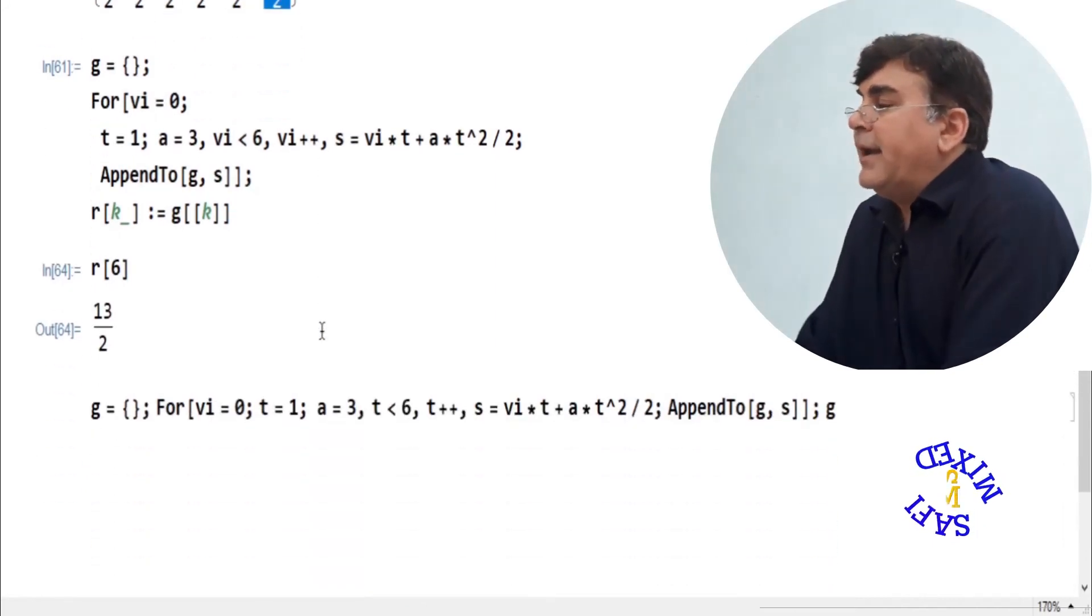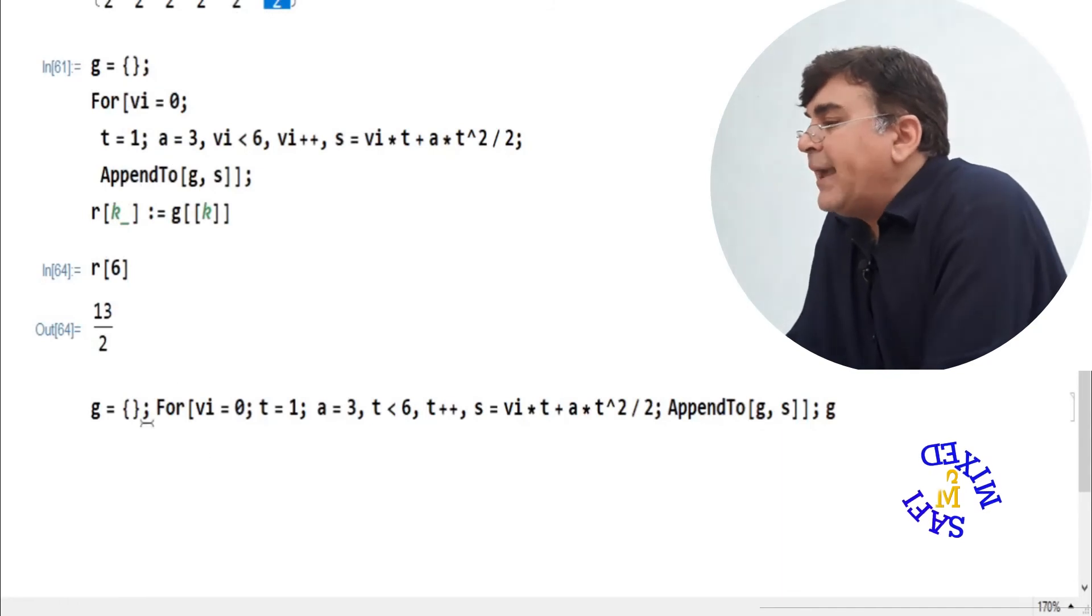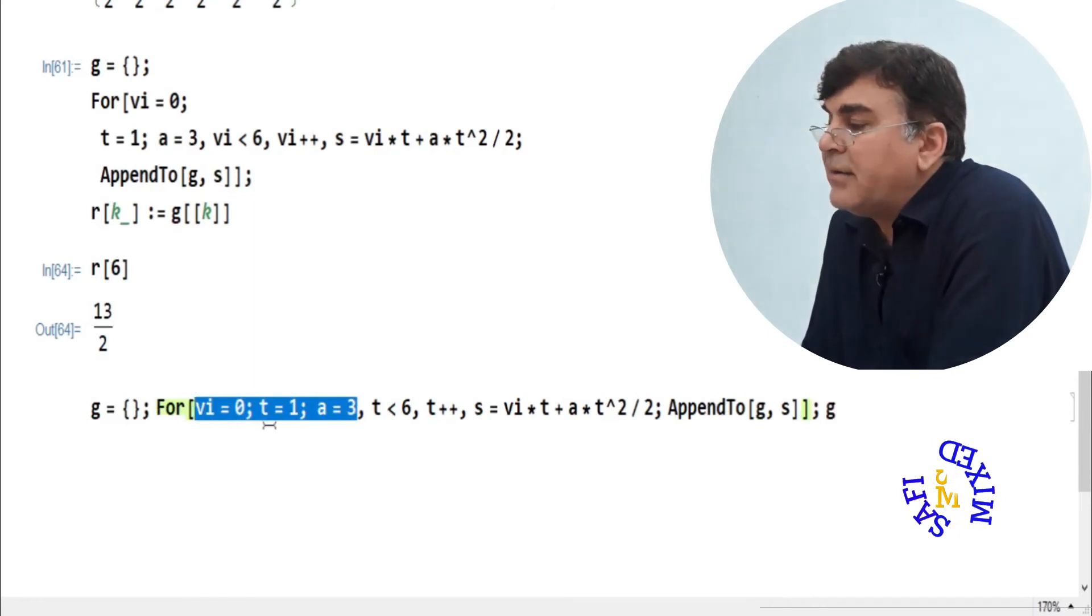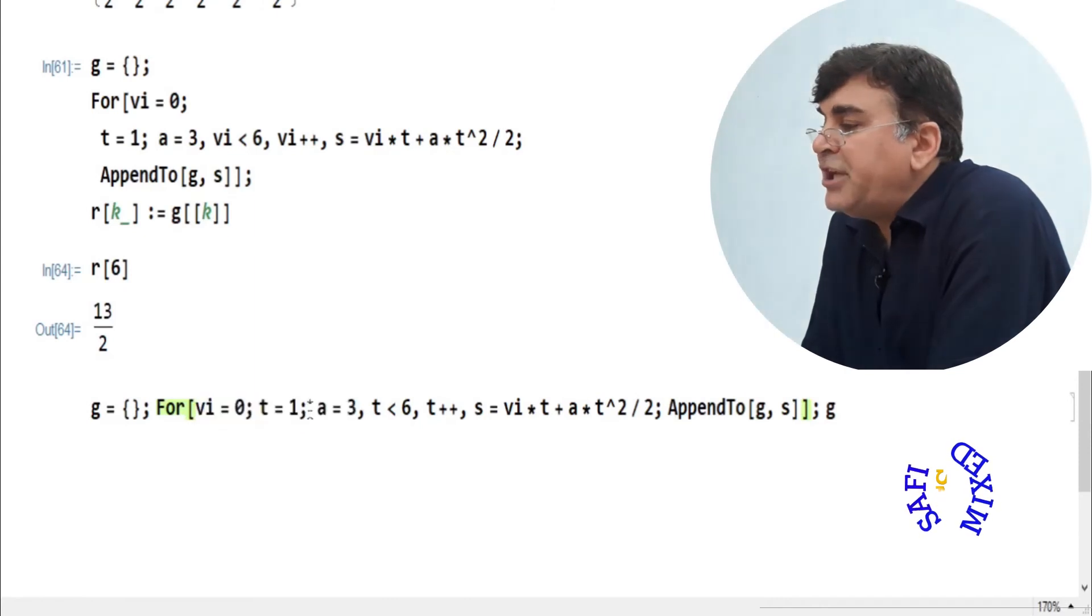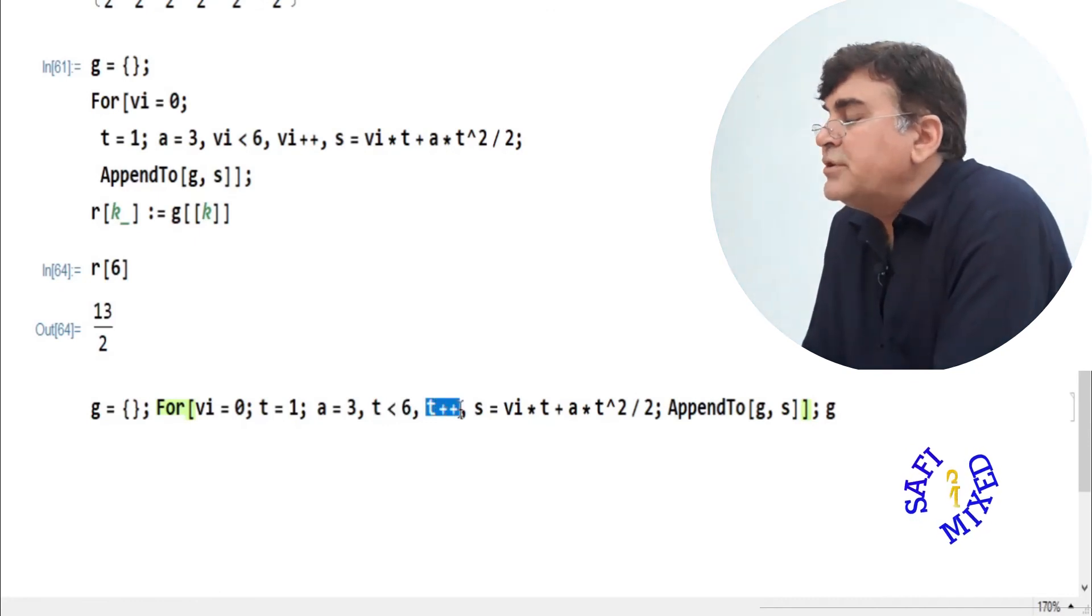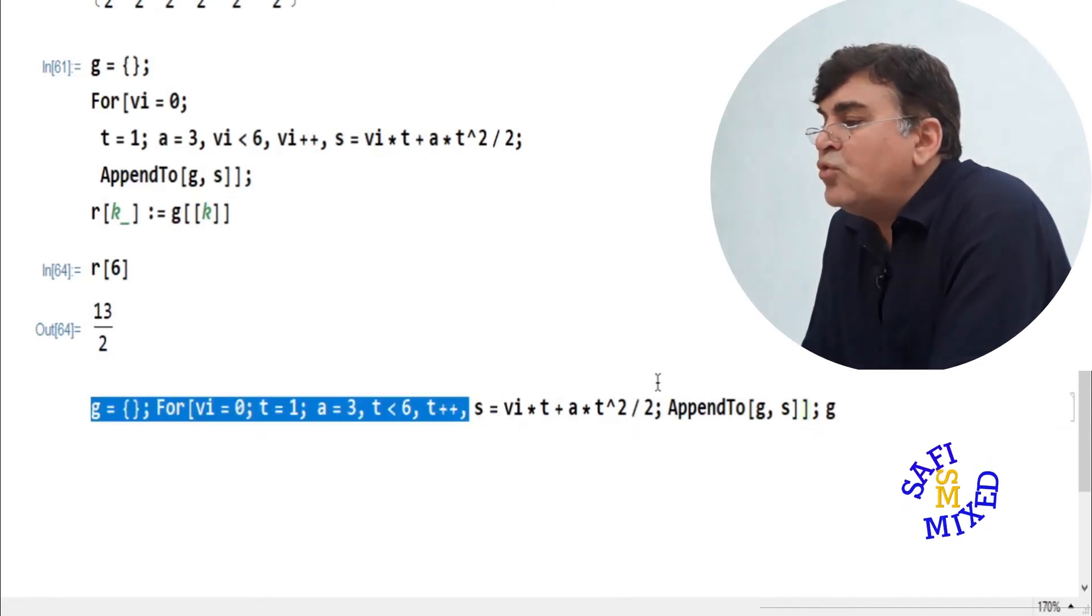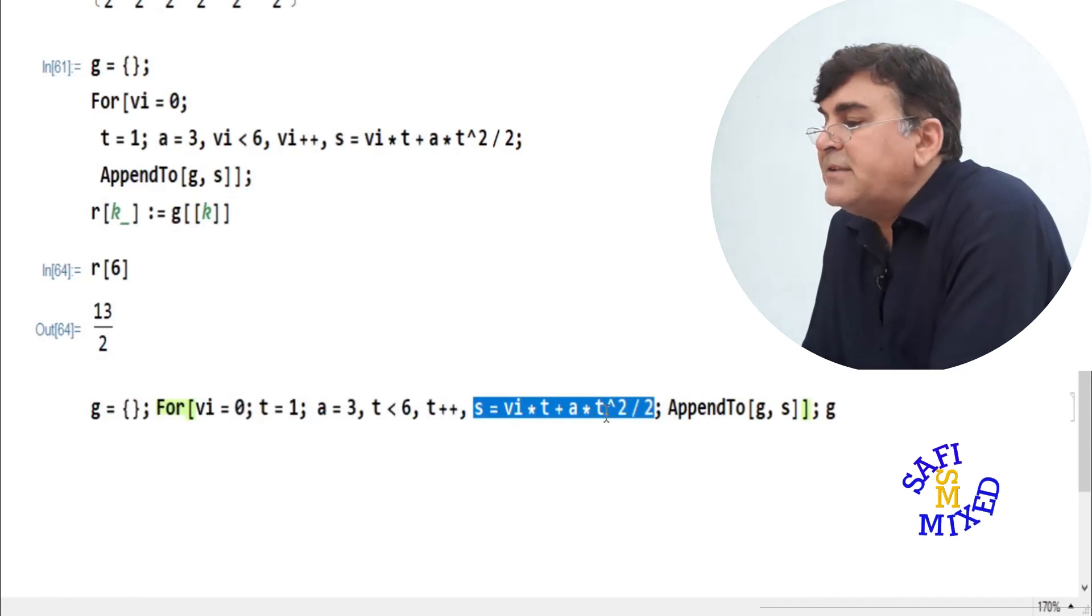Okay, instead of V_I, I can change the iterator to T or A in the first part of the argument of the for loop by changing the condition from V_I to T. If I do this and run this program, now the equation would be iterated for different choices of time T.